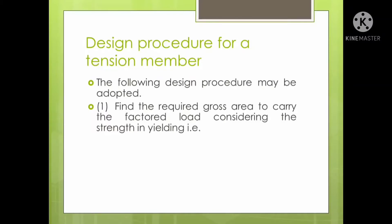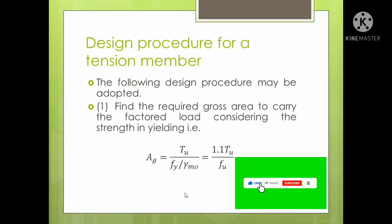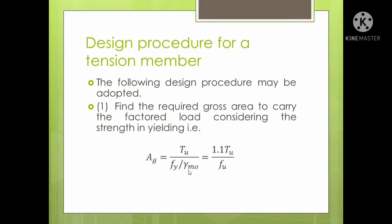This gross area is to be found using the design load that is given. You have to design the member for resisting some load — that load is either given or you have to evaluate. The formula is Tu divided by Fy upon gamma Mo, where gamma Mo is the partial safety factor, which we are using as 1.1.